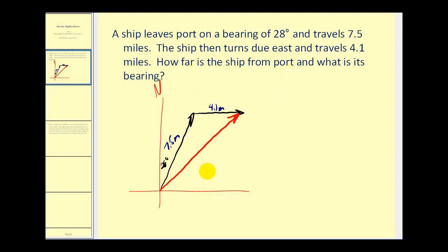Let's take a look at our sketch in a little more detail. If this is 28 degrees, then we know this is a right angle, so this angle here must be 90 degrees minus 28 degrees, or 62 degrees. Next, the x-axis and this vector here are parallel, so here we have interior angles and these are supplementary. So if this is 62 degrees, this would have to be 180 degrees minus 62 degrees, or 118 degrees.